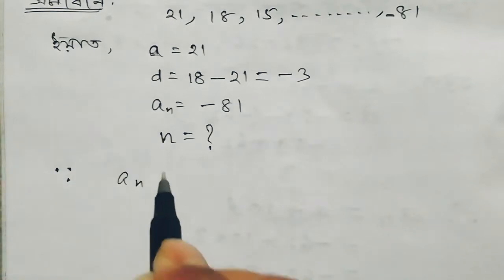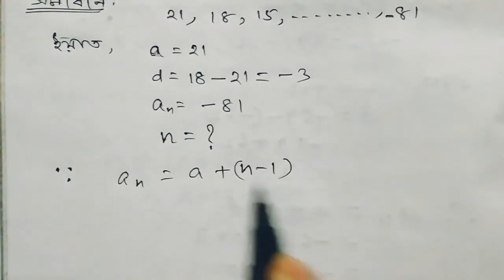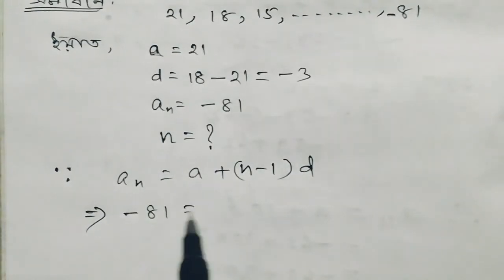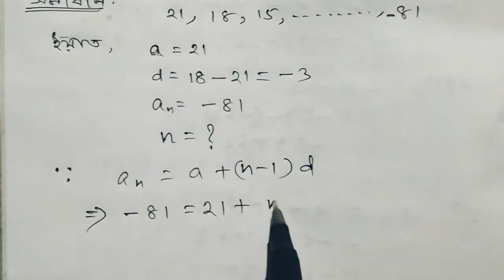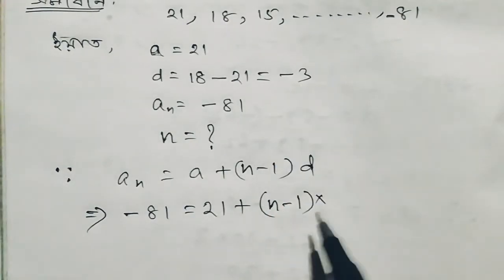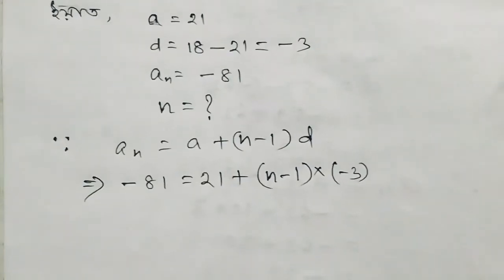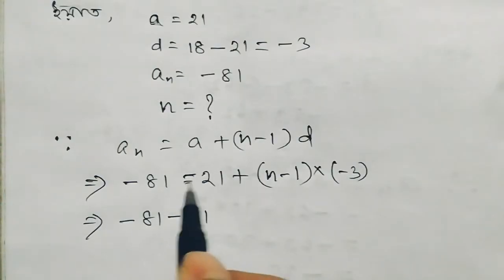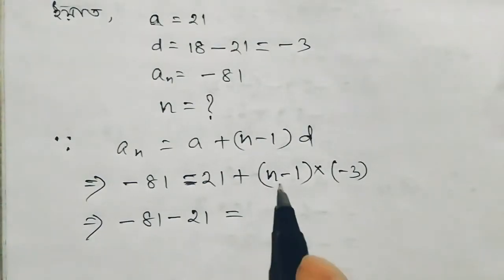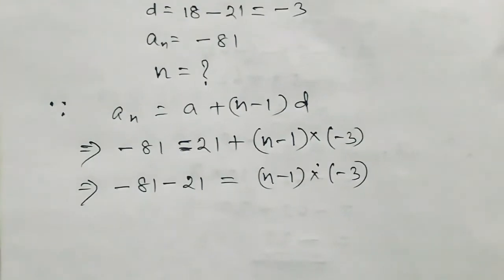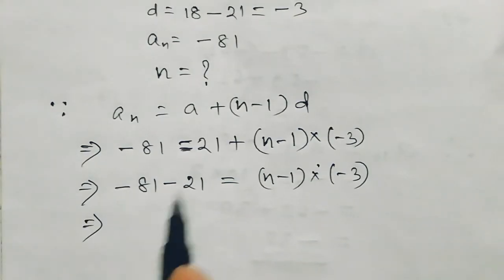Students, we know the formula: a_n equals a plus n minus 1 into d. So we know a_n equals minus 81 and a equals 21, and we apply the formula.